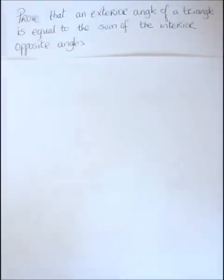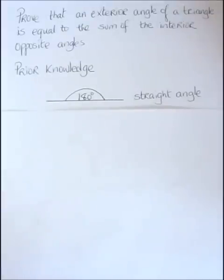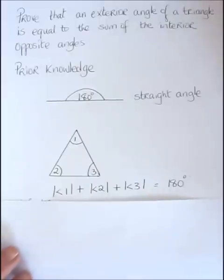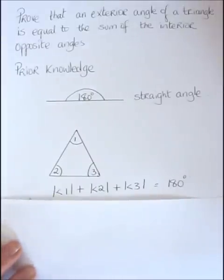Now again before we start the theorem let's revise some things. First of all again we have our familiar straight angle which lies on a straight line which is 180 degrees. We're going to need this again for this theorem.